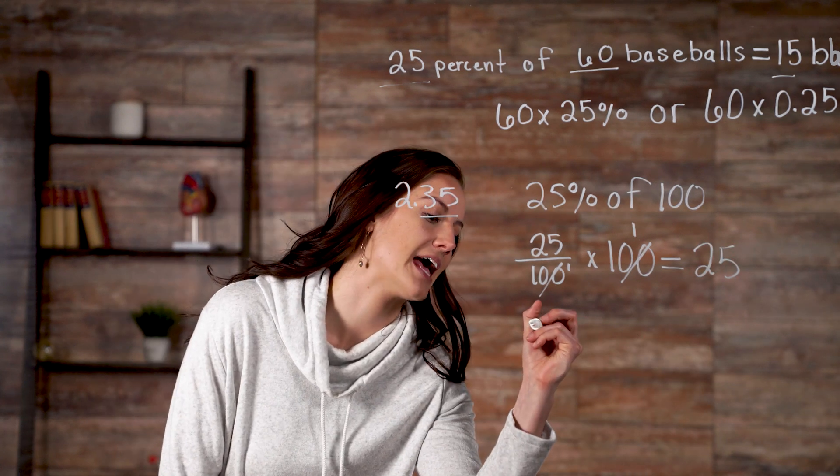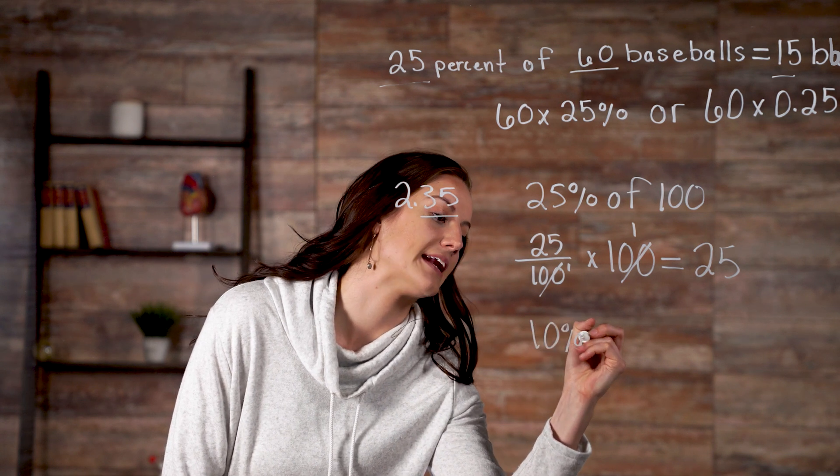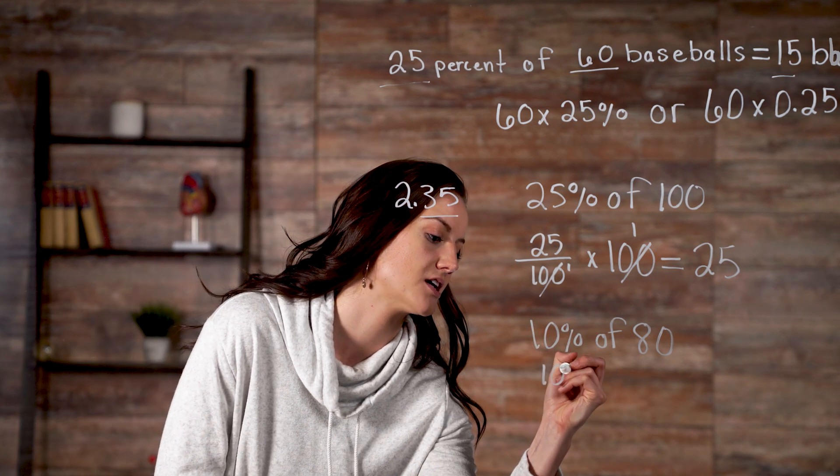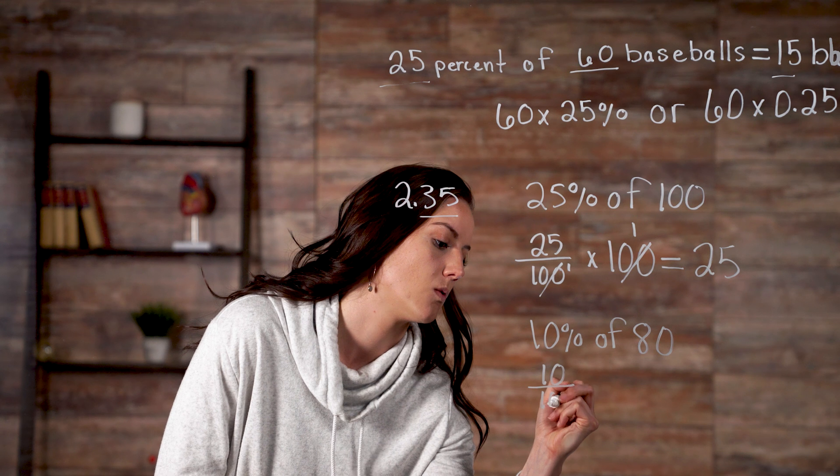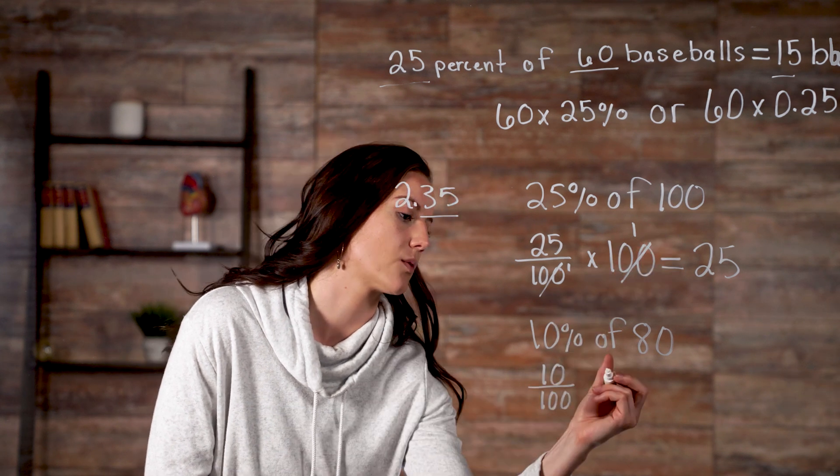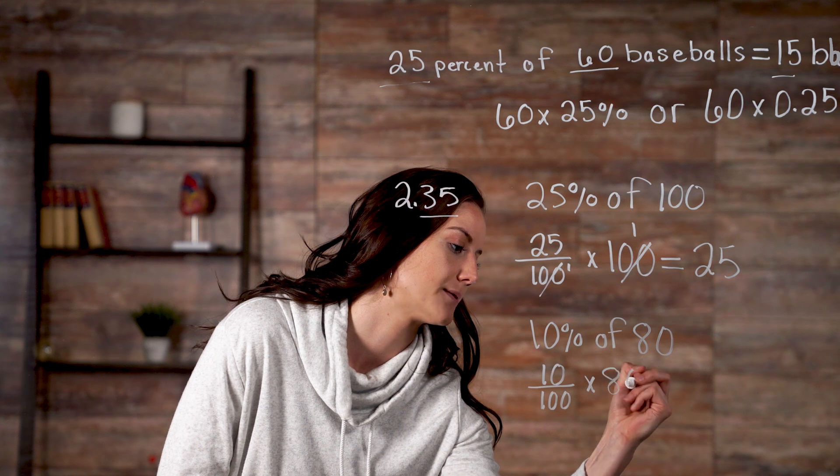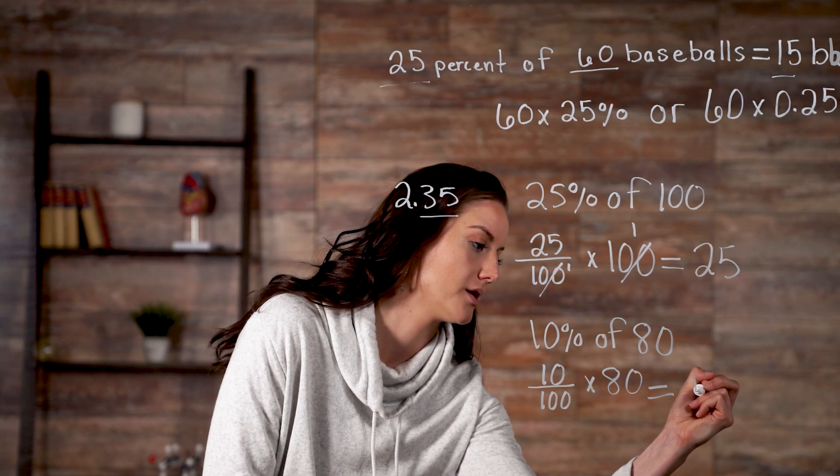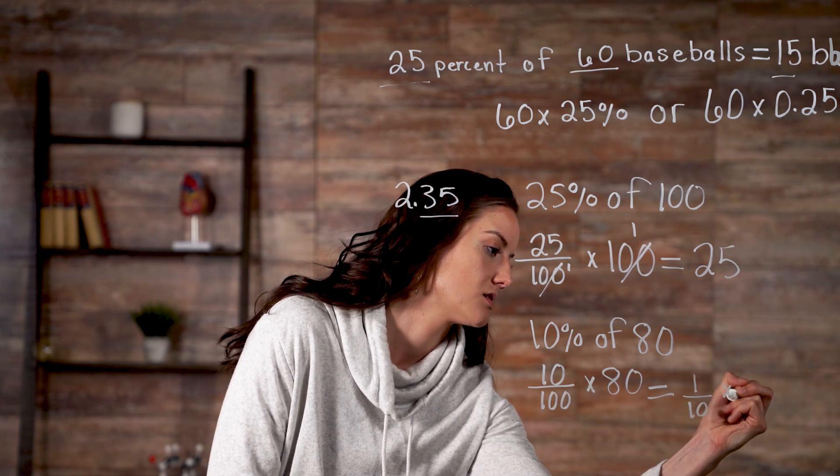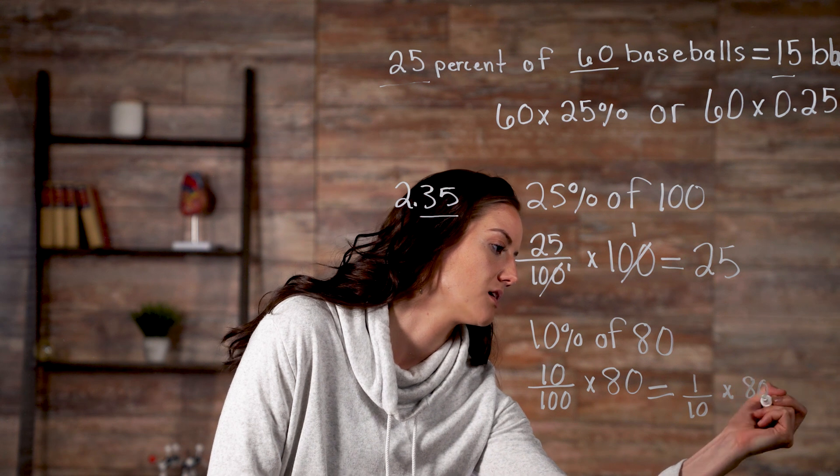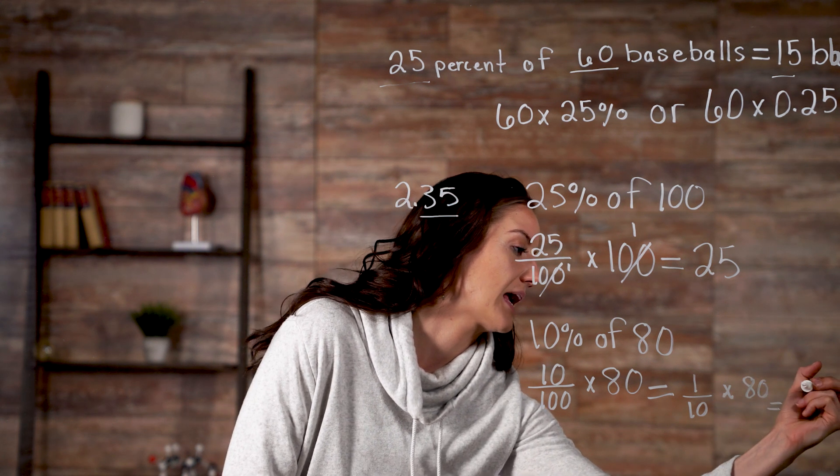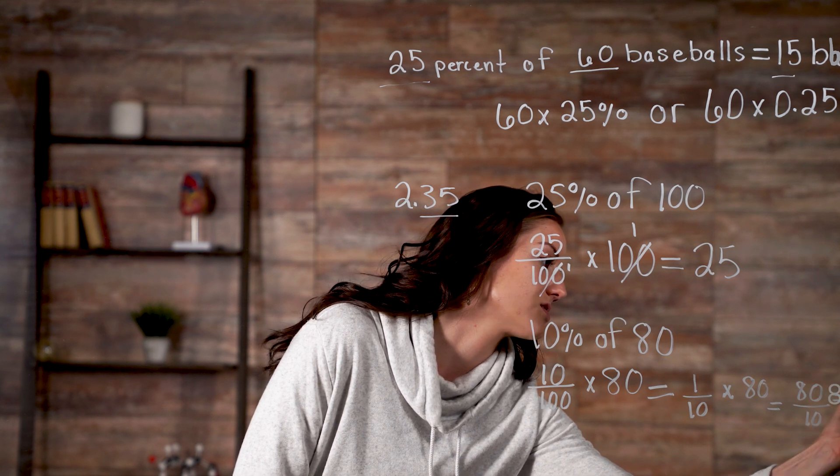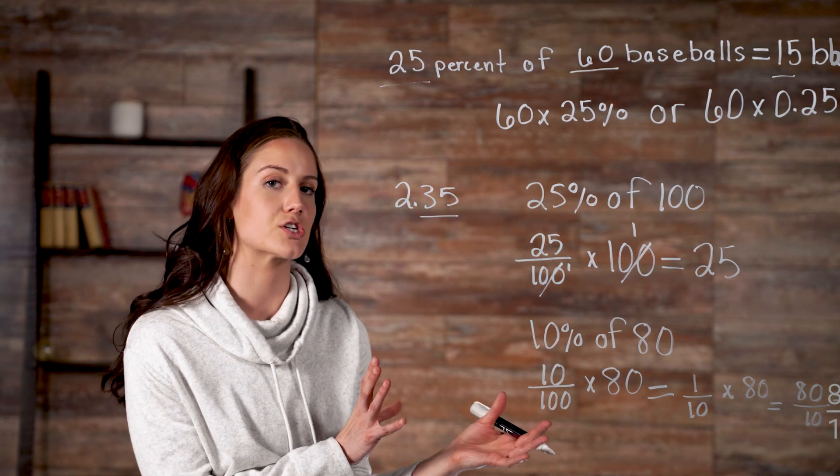Let's do another and calculate 10% of 80. So again, because we're talking about a percent, it's still per 100. So 10% is equal to 10 over 100. And then just like we did here, we're going to multiply that times 80. So 10 over 100 can be reduced to 1 over 10. So when you have that times 80, you get 80 over 10, which reduces to 8 over 1. So our answer is 8.